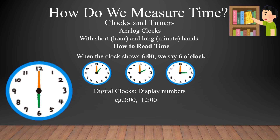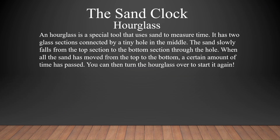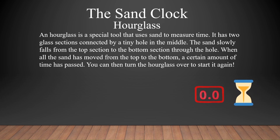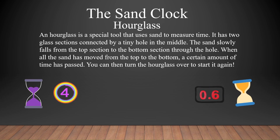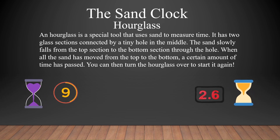Digital clocks display numbers — for example, 3 means 3 o'clock, and 12 means 12 o'clock. Timers help measure short durations. The sand clock, or hourglass, is one of the oldest timekeeping devices. An hourglass uses sand to measure time — it has two glass sections connected by a tiny hole in the middle. The sand slowly falls from the top section to the bottom through the hole. When all the sand has moved, a certain amount of time has passed. You can then turn the hourglass over to start it again.